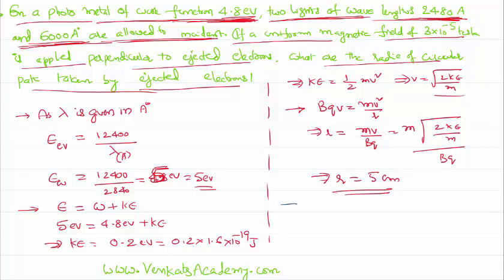How about the second one having wavelength of 6000 angstrom? The corresponding energy in electron volts is 12400 by 6000, which is equal to 2.08 electron volts. Energy of this photon is less than that of the work function, which is given in the problem as 4.8 electron volts.